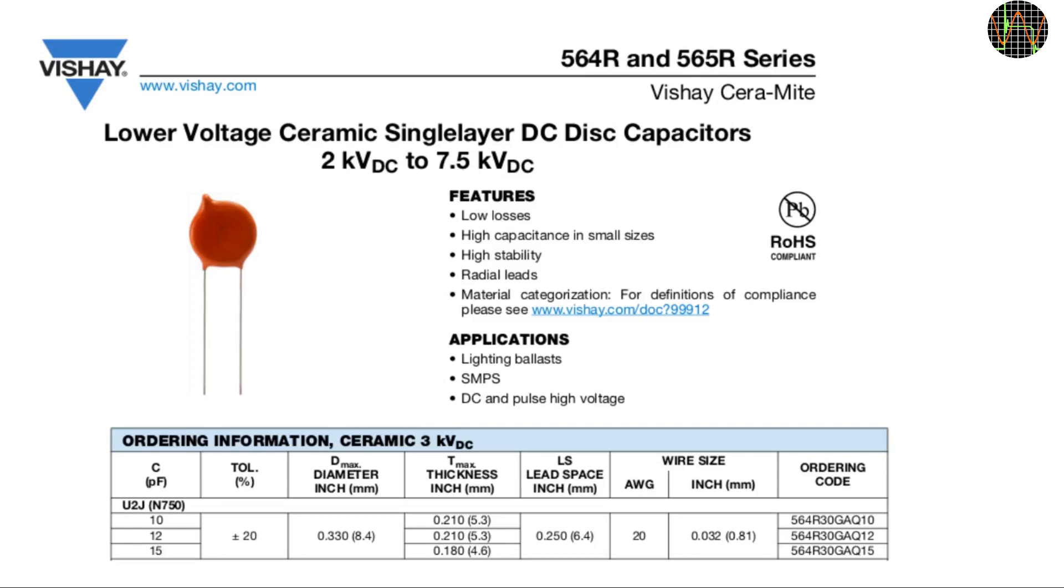For the capacitors the search was even harder because suitable types and values are rare. In the end I picked what was available at RS components which happened to be 15pF Vishay types rated for 3kV. Originally I looked for 10pF but I could not find anything suitable in stock so I settled for 15pF, and even those were so expensive that they are sold individually. With 3kV per capacitor the probe should handle 15kV instead of 10kV, but I would not recommend it and I rather treat it as a safety factor.